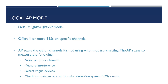First of all, Local Mode. This is the default mode when an AP joins a wireless LAN controller. It allows our AP to broadcast one or more basic service sets, also known as an SSID, on specific channels. In Local Mode, whilst the AP isn't transmitting frames to clients, it scans other channels for the following: noise, interference, rogue devices, and checks for intrusion detection system events.